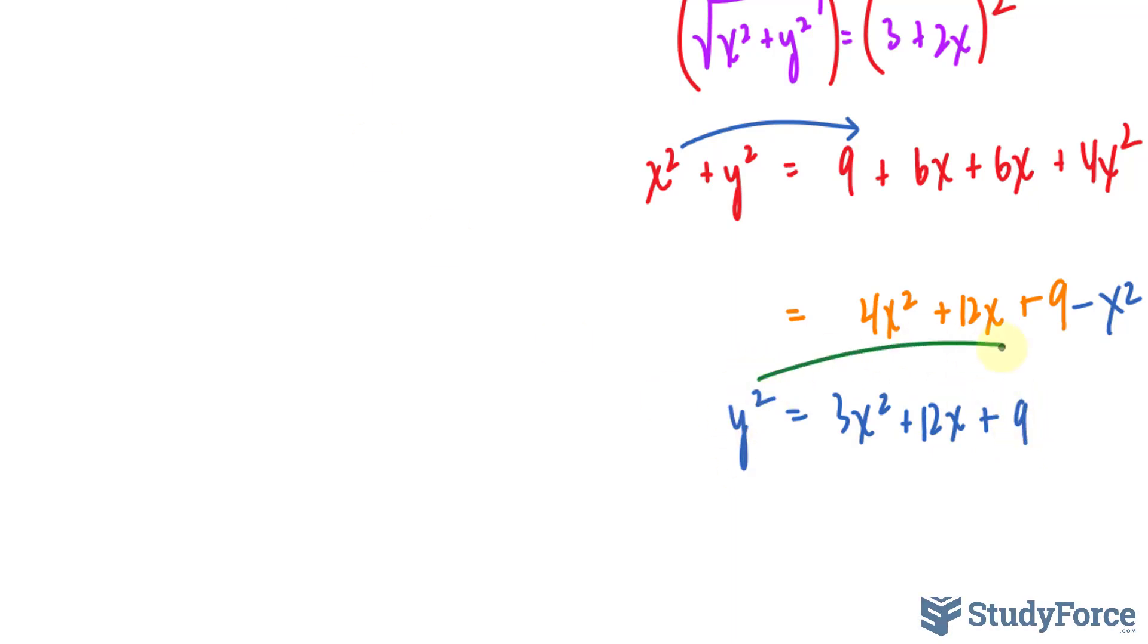And at this point we can even bring the y squared term over where we get 3x squared minus y squared plus 12x plus 9 is equal to 0.